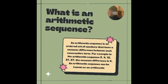An arithmetic sequence is an ordered set of numbers that have a common difference between each consecutive term. For example, in the arithmetic sequence 3, 9, 15, 21, 27, the common difference is 6. An arithmetic sequence can also be known as an arithmetic progression.